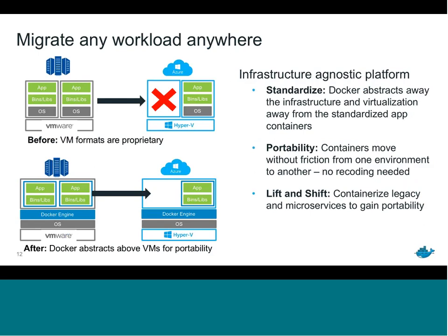You also have the ability to migrate workloads anywhere, thanks to containers' standard format and portability. If you have a workload running in VMware vSphere and try to migrate it to Azure using solely VMs, you can't — VMs are proprietary formats. But since Docker abstracts above the VM layer, you can take that workload running in VMware vSphere and migrate it to Azure and have it run the exact same way, with no re-coding or conversions required. You get standardization, portability, and what's called lift and shift — containerizing legacy apps to benefit from that portability.